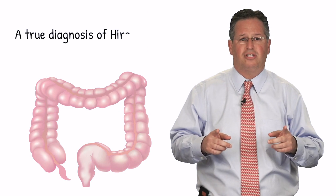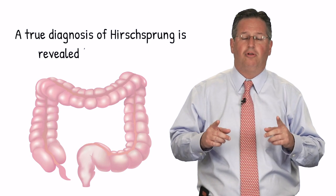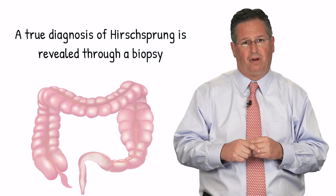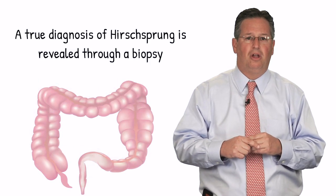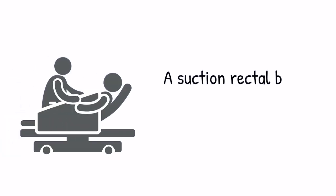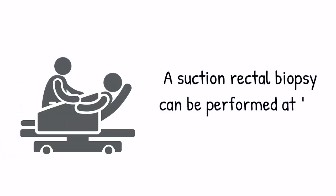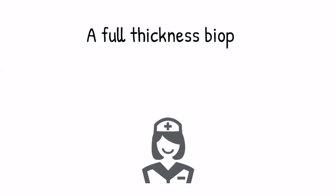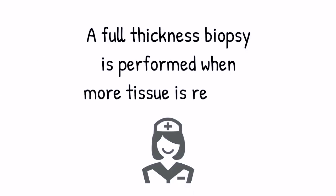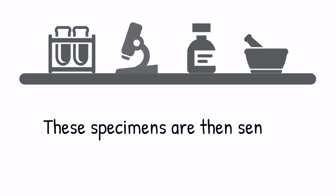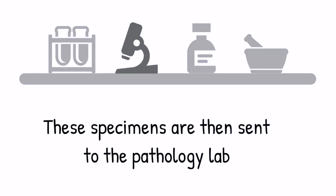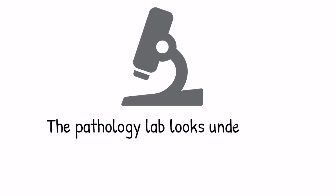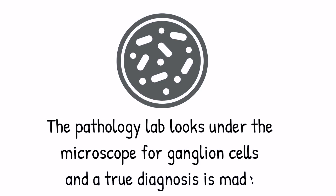To get the true diagnosis we need to do a biopsy, and that could be performed in one of two ways. We can either do a suction rectal biopsy, which could be performed at the bedside or in the clinic, or we have to do a full thickness biopsy when more tissue is required. These specimens are then sent to the pathology lab where they are looked under the microscope for ganglion cells and a true diagnosis is made.